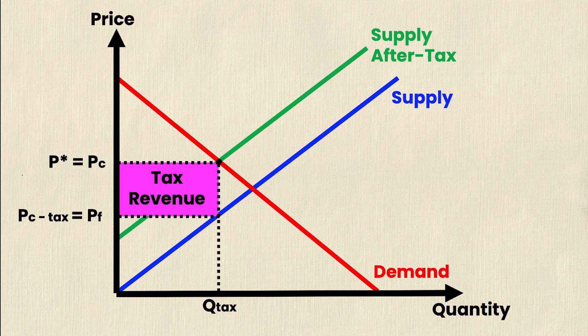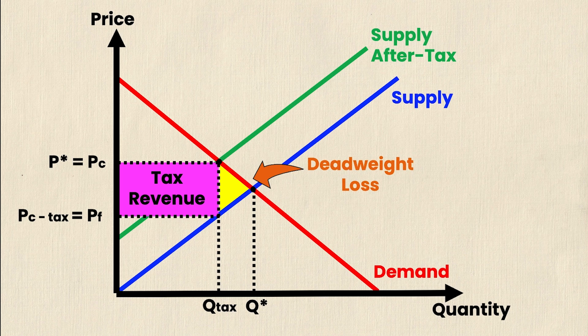Now you'll notice that Q tax is strictly less than our original equilibrium Q value which was right here at Q star. And so that gives us a little triangle in the middle. And as you might have guessed, that's actually our deadweight loss because there's inefficiencies when we are out of our original equilibrium when this shift to the supply after tax curve happened. So this deadweight loss right here occurs because Q tax is strictly less than Q star or our original equilibrium.